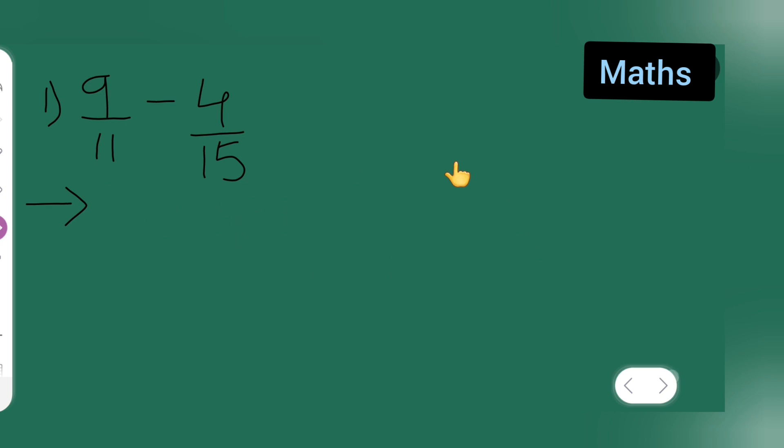So let us start. First, what we have to do is 9 into 15. So write down this as it is: 9 upon 11 minus 4 upon 15 is equal to, so 9 15s, it will be 135 minus 4 11s are 44 upon 11 15s are 165.